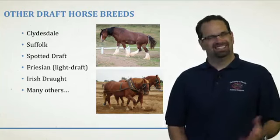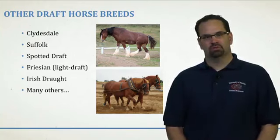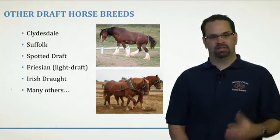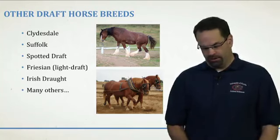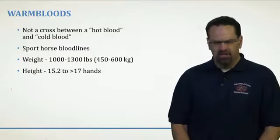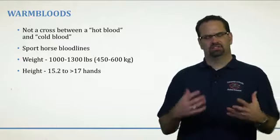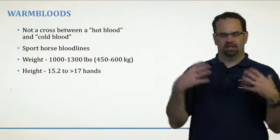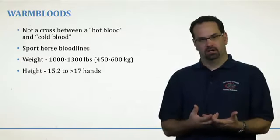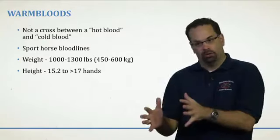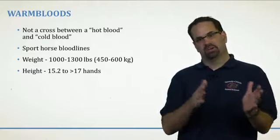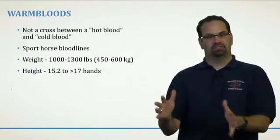The Friesian is also on the list — sometimes it can be referred to as a light horse or a light draft. Friesian-type animals are typically ones that people ride quite a bit, but they can also pull carts. Now the next class is the warm bloods. These were not brought about by crossbreeding hot bloods and cold bloods — don't think that's how they came about. They're actually just a separate class of animals.